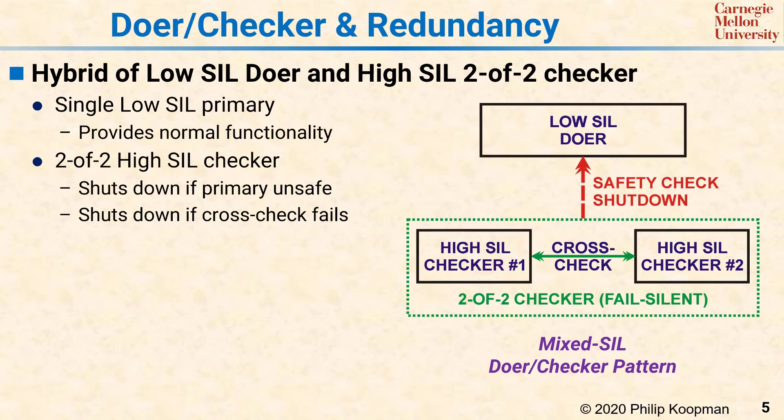It might be that the doer is a big 32-bit CPU with lots of resources, and the checkers might only be 8-bit CPUs that are just enough to get the checking done. Because high-SIL software can be dramatically more expensive to develop than low-SIL software, this approach can be a significant win in system cost because of the reduced software development costs.